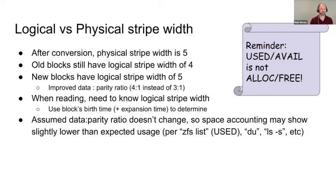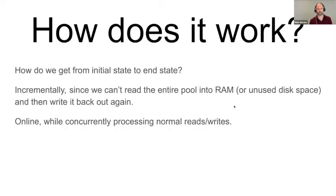And so, after the expansion, we don't need to allocate quite as much parity for each piece of data on average. So, you might find that the space used is actually a little bit lower than you expected due to the improved data to parity ratio. Oh, and because now we have blocks with different logical stripe widths, we need to know, we need to be able to figure out like which logical stripe width it was. And we can do that by using the blocks birth time, which is in the block pointer, to determine like if it was written before slash during the expansion or written after the expansion with the new larger logical stripe width.